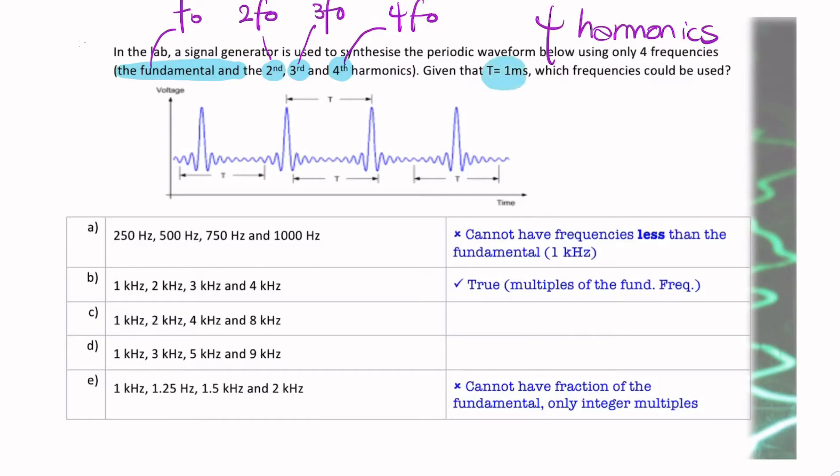We're given the fundamental period T equals one millisecond. And we're asked, what frequencies can we use? So really, we don't have much choice in the matter. We're not choosing frequencies. We're told the fundamental frequency is one millisecond. From that, we can find the harmonic. So it's one over one millisecond, which is one kilohertz.